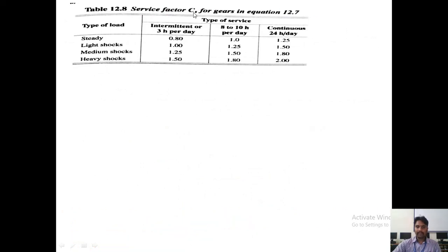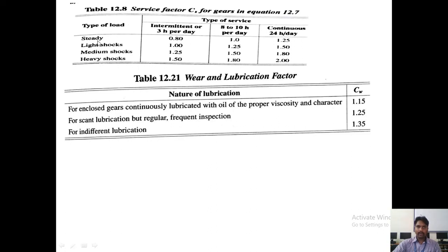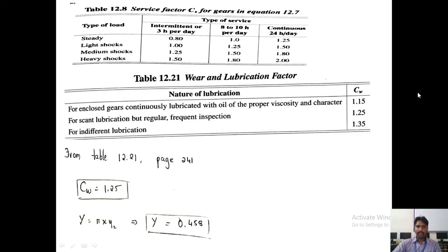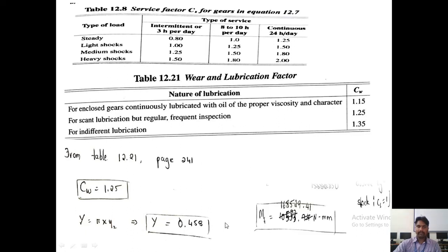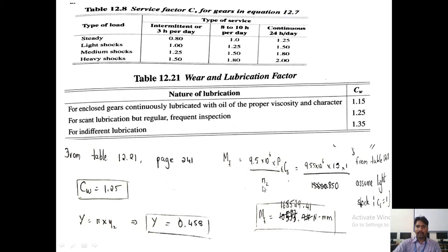Since Cs is not given, assume steady load with 8–10 hours per day service, so Cs = 1. For wear and lubrication factor under scant lubrication but with regular frequent inspection, take CW = 1.25 from the table. The Lewis form factor Y2 = pi × (0.154 − 0.912/Z2_e) = 0.458. Torque MT = 9.5 × 10⁶ × P / N2, multiplied by service factor Cs = 1, giving MT = 168,529.41 N·mm.